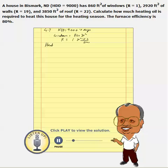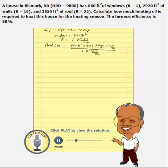So we can calculate heat loss through windows. All we need is the area — 860 square feet — times HDD, which is 9,000, times 24 hours in a day, divided by the R-value of 1. The units cancel out — square feet, degrees Fahrenheit, and hours — and the total heat loss through windows is 185,760,000 BTUs.